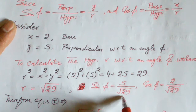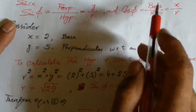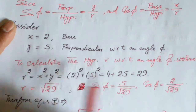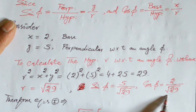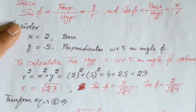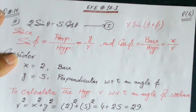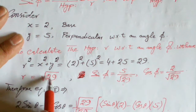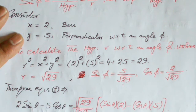So sin(φ) = 5/√29. And cos(φ) is equal to x over r, where x is 2 and r is √29, giving cos(φ) = 2/√29. Now multiply and divide the original equation by √29.